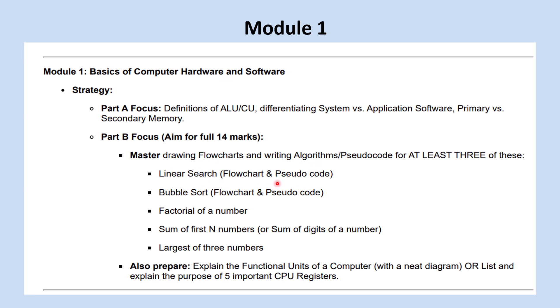Linear search, you have to learn the flowchart and pseudocode. Then bubble sort, flowchart and pseudocode, factorial of a number, sum of first n numbers, then largest of 3 numbers. Among these 5, you can select at least 3.